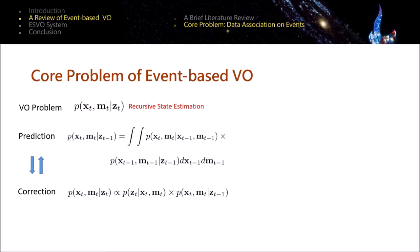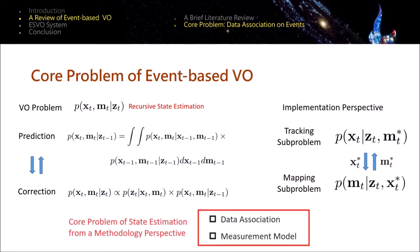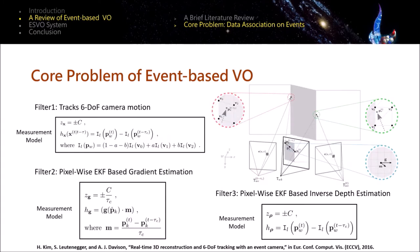Therefore, the interleaved tracking and mapping threads exchange information constantly. From a perspective of methodology, the core problem of state estimation is to establish data association and determine the measurement model. We use the ECCV 2016 paper as an example to explain this methodology.